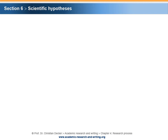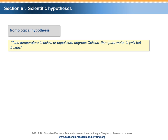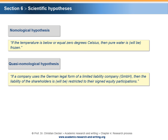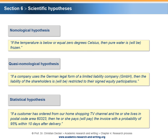The different forms of scientific hypotheses can be demonstrated by the following examples. A nomological hypothesis — without a space-time restriction and without a probabilistic character — would be: if the temperature is below or equal to 0 degrees Celsius, then pure water is or will be frozen. A quasi-nomological hypothesis — with a space-time restriction and without a probabilistic character — would be: if a company uses the German legal form of a limited liability company (GmbH), then the liability of the shareholders is or will be restricted to their assigned equity participations. A statistical hypothesis — with a space-time restriction and with a probabilistic character — would be: if a customer has ordered from our home shopping TV channel and lives in postal code area 6323, then he or she pays or will pay the invoice with a probability of 95% within 10 days after delivery.